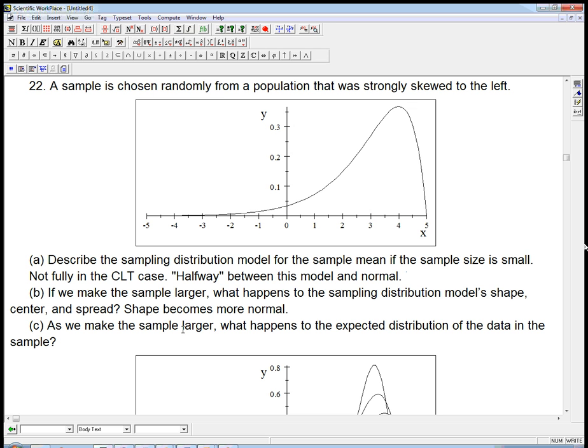And what happens to the center? The center should stay the same, because the sampling distribution for the mean, whether we pick one at a time, or two at a time, or ten at a time, or a hundred at a time, the average of all the averages should be the average of the original distribution. So that's the one thing that should stay the same. The center, in the sense of the mean, not in the sense of median or any other measure of center, but the mean should stay the same. That's part of the CLT.